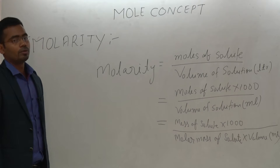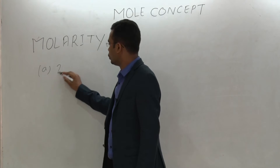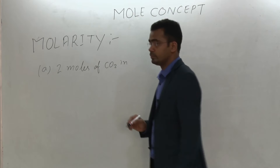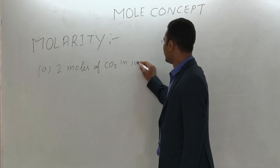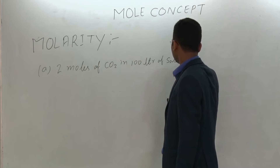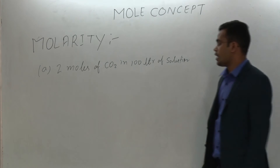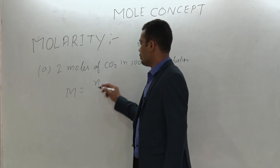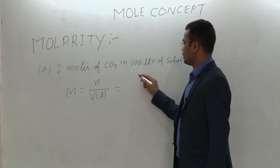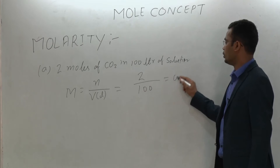Now we are going to solve some questions based on this. Question A: 2 moles of CO₂ in 100 litres of solution — calculate the molarity. As you know, molarity equals moles of solute divided by volume of solution in litres. Moles is given as 2 and volume is 100 litres, therefore molarity equals 2/100 = 0.02.